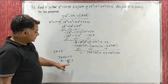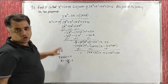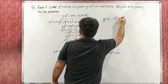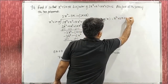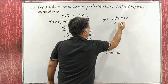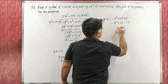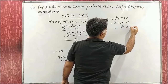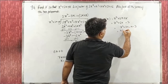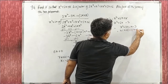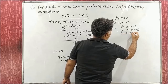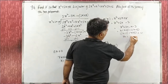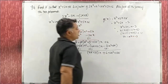Now to find the zeros: substitute k = −3 into g(x). g(x) becomes x² + 2x − 3. Split: x² + 3x − x − 3 = x(x+3) − 1(x+3) = (x−1)(x+3). Setting to zero: x = 1 and x = −3.